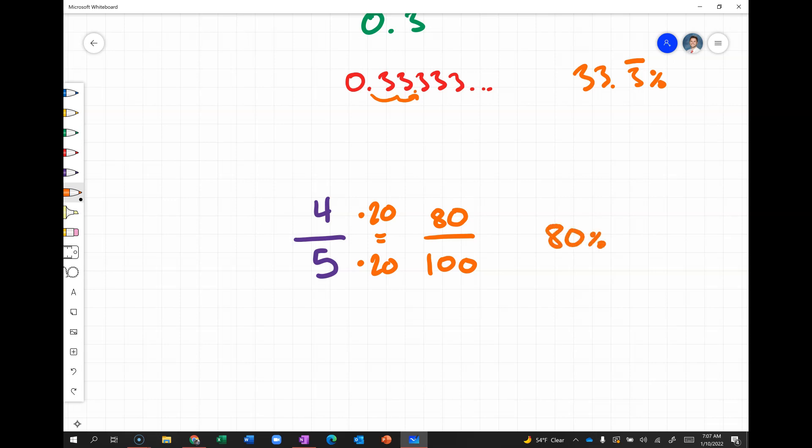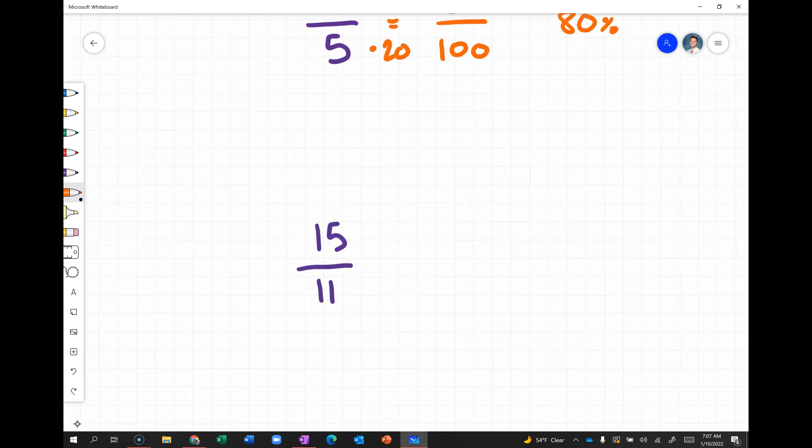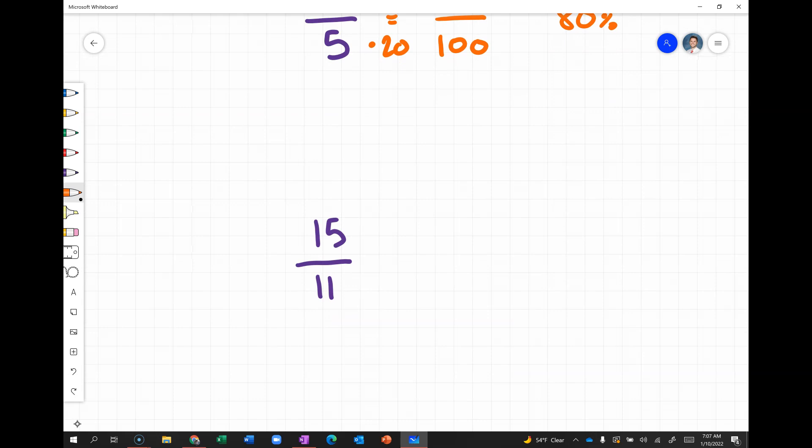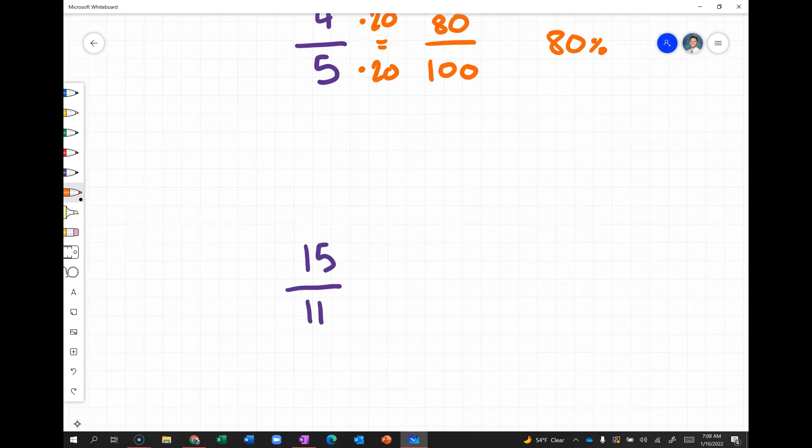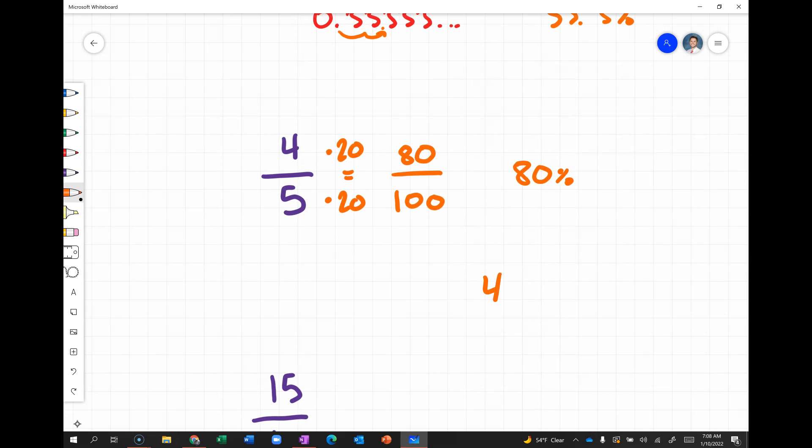But, it's not always going to be a denominator that works so easily. For example, if we have 15-elevenths, there's no whole number that we can multiply by 11 to get 100. So, another way that we can do this is to simply divide. Because, we know that 15-elevenths is equivalent to 15 divided by 11. And, if we do that, that will give us the decimal form of this number. So, let's prove that with this first one, four-fifths. If we were to do four divided by five, five goes into four zero times. Five goes into forty eight times. So, that gives us 0.8. And, if you were to move your decimal twice to the right, you would get 80%.